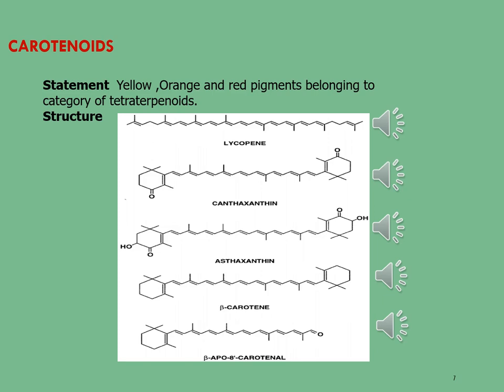The second molecule is canthaxanthin. Canthaxanthin was first extracted from an edible mushroom in the 1950s. It has since been identified in sea trout, algae, daphnia, salmon, brine shrimp, and several species of flamingo. In addition to natural sources, canthaxanthin can be synthetically produced from acetone. People use it as medicine; canthaxanthin is used to reduce sensitivity to sunlight, called photosensitivity, experienced by people who have the genetic disease erythropoietic protoporphyria, in which sunlight can cause skin reactions such as itches and rashes.